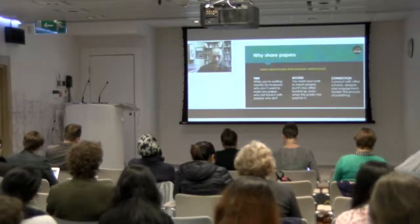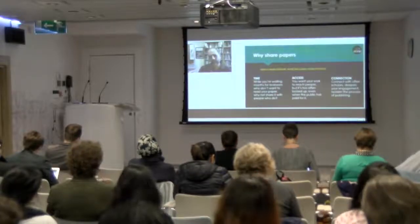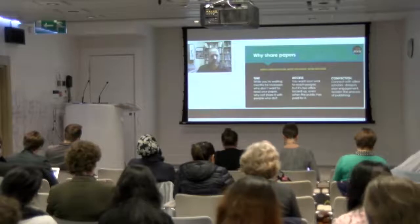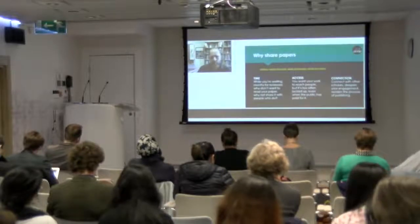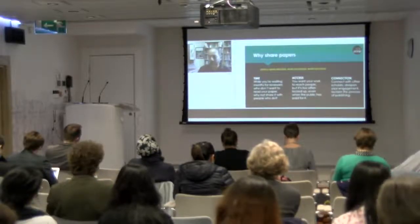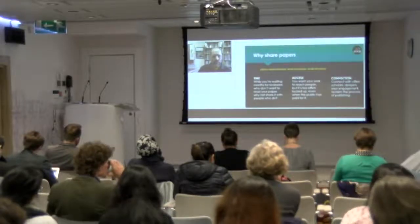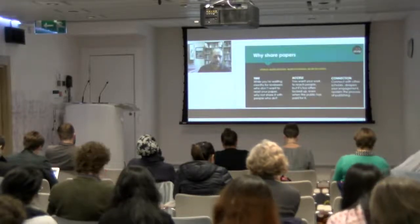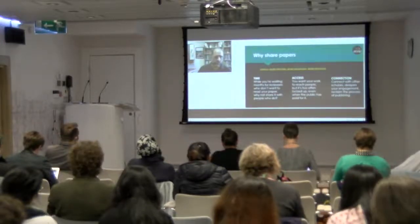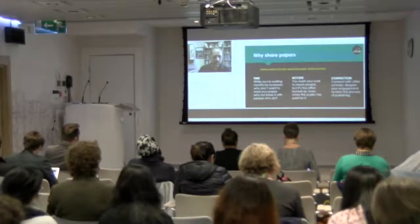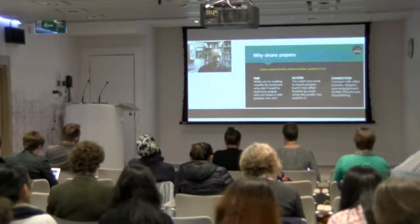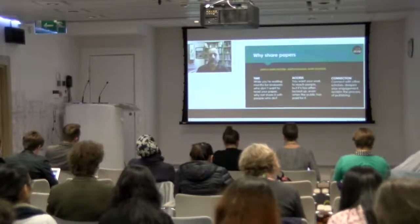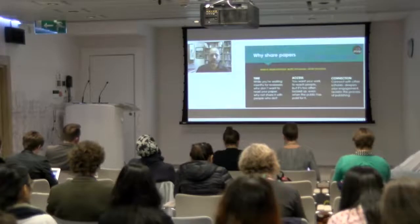A preprint server like Social Archive can get the work out on Google Scholar and other search engines and have it be discovered and read without people having to pay for it — assuming you haven't signed away your right to distribute it. And then finally, the category of connection: sharing work earlier and more often and more openly is a way to connect with more scholars, to deepen your engagement with other audiences including non-academic publics. Our sense is that this is a way for scholars and librarians to reclaim and control the publishing process rather than leaving it to for-profit publishers.